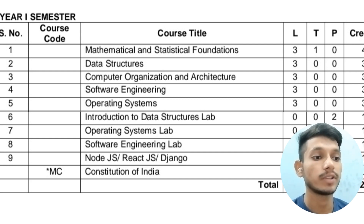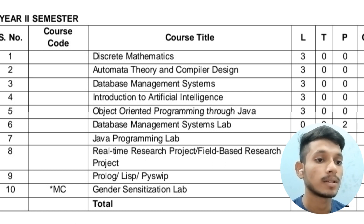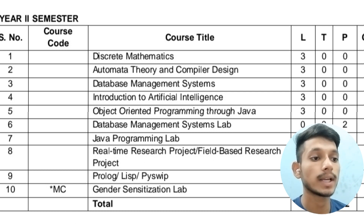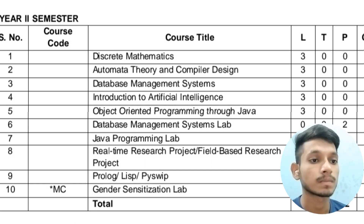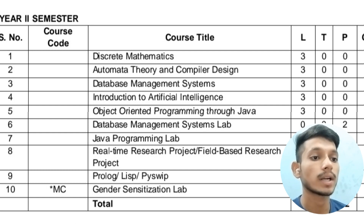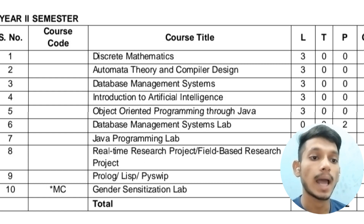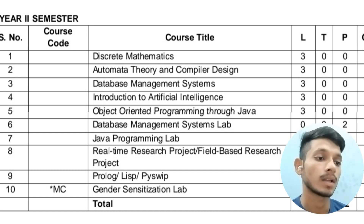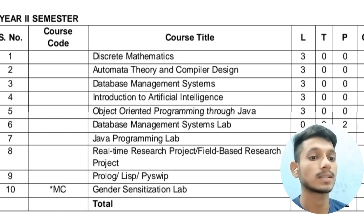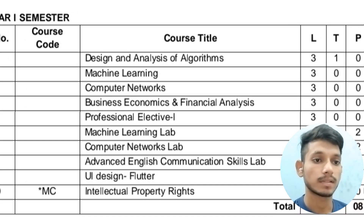The non-credited subject is Constitution of India. In the second semester of second year, there are 10 subjects including labs and a non-credited subject. The subjects are: Discrete Mathematics, Automata Theory and Compiler Design, Database Management Systems, Introduction to Artificial Intelligence, Object-Oriented Programming through Java, a DBMS Lab, a Java Lab, a Real-Time Research Project, and a Gender Sensitization Lab. There are 20 credits total for this semester.